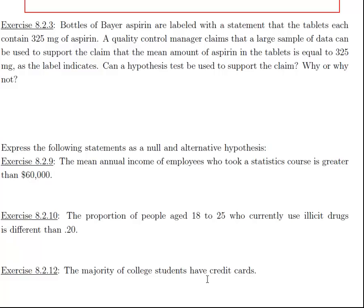Bottles of Bayer aspirin are labeled with a statement that tablets contain 325 milligrams of aspirin. A quality control manager claims that a large sample of data can be used to support the claim that the mean amount of aspirin is equal to 325, as the label indicates. Can a hypothesis test be used to support the claim? Why or why not?